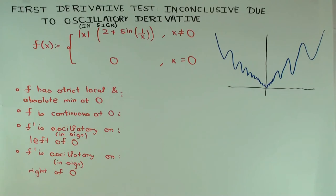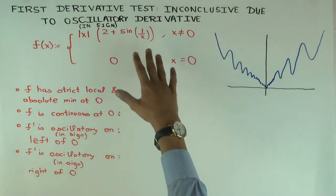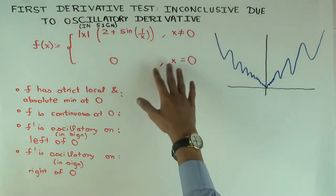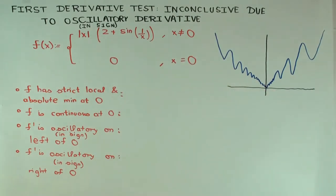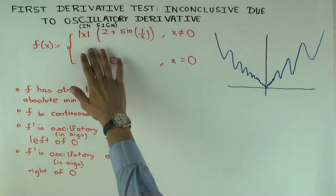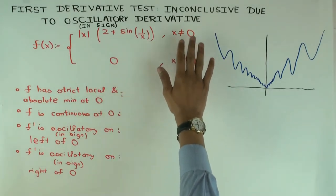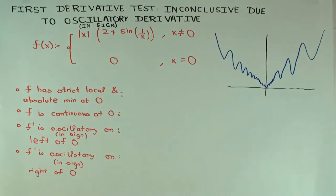Let's get started on showing why it doesn't work. I want to take a numerical, algebraic version of this and show that it basically meets this qualitative criteria. The expression is: f(x) equals the absolute value of x times (2 plus sin(1/x)) for x non-zero, and zero for x equal to zero. The first thing I want to argue is that f has a strict local and absolute minimum at zero.